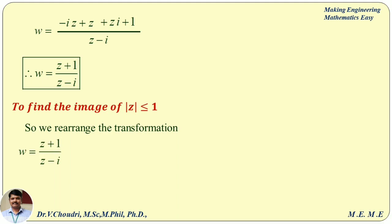If we apply the componendo and dividendo method — adding and subtracting the numerator and denominator — we may get one z term and another constant term. Looking at z plus 1 and z minus i, adding these terms gives z with a constant. Therefore, componendo and dividendo rule is not applicable here, so the best method is the cross multiplication method.